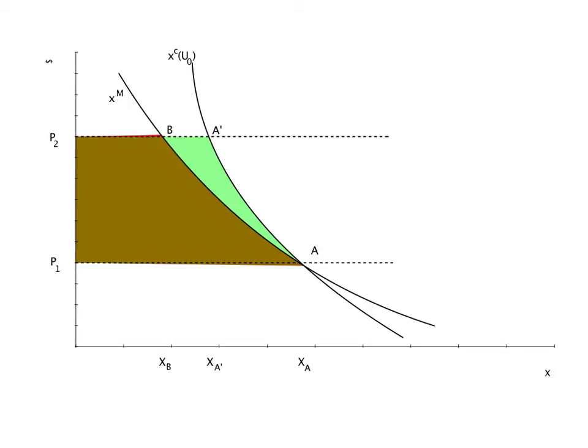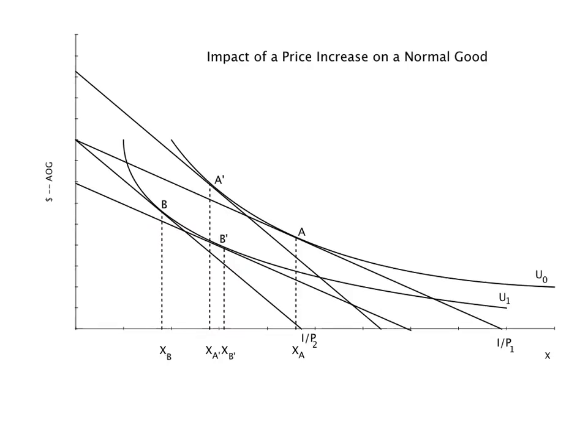To get the equivalent variation, we look at the gain in consumer surplus from avoiding the price increase. The shift from B to B prime measures the substitution effect of lowering price back down from P2 to P1, maintaining utility at the new lower level U1, and the resulting gain in effective income needed to complete the full adjustment back to A is the equivalent variation.